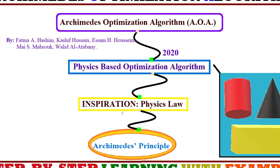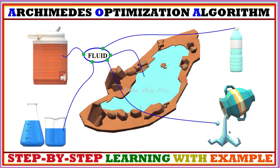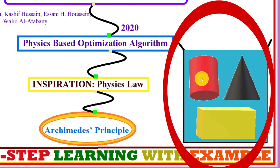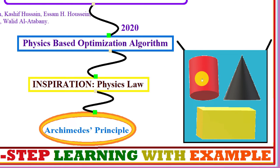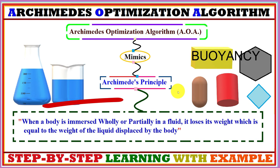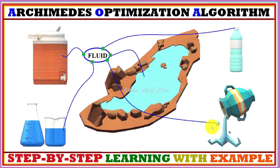This algorithm mimics what happens when objects of different weight and volume are immersed in a fluid. First we will try to understand Archimedes' principle so we can easily understand how this algorithm works. When any body is placed inside a fluid, a force is exerted by the fluid on the body, known as buoyant force, and this whole process is known as buoyancy. According to Archimedes' principle, when a body is immersed wholly or partially in a fluid, it loses weight equal to the weight of the fluid displaced by the body.